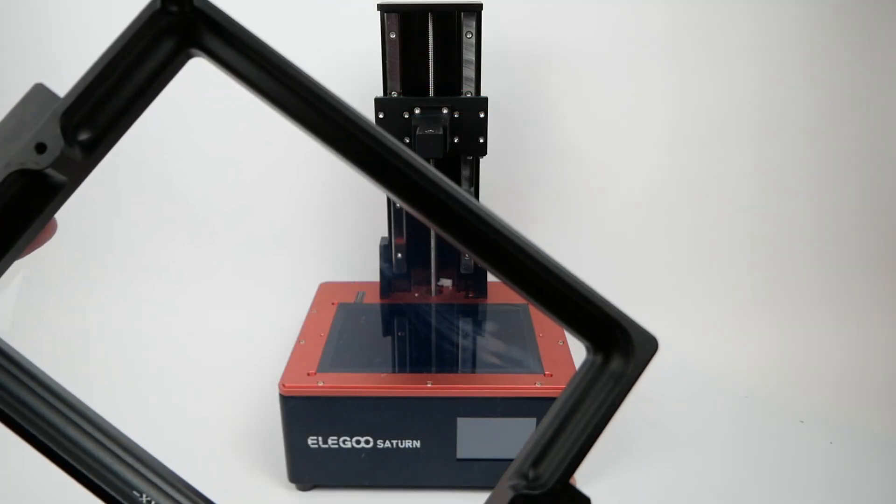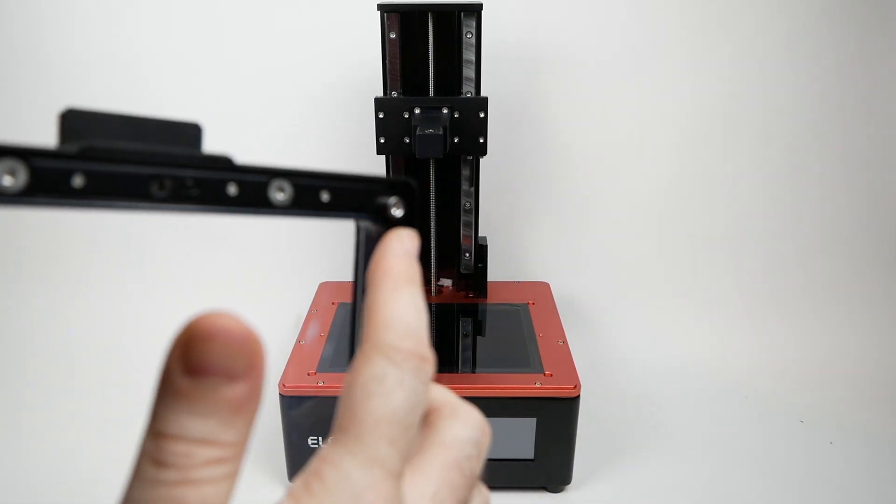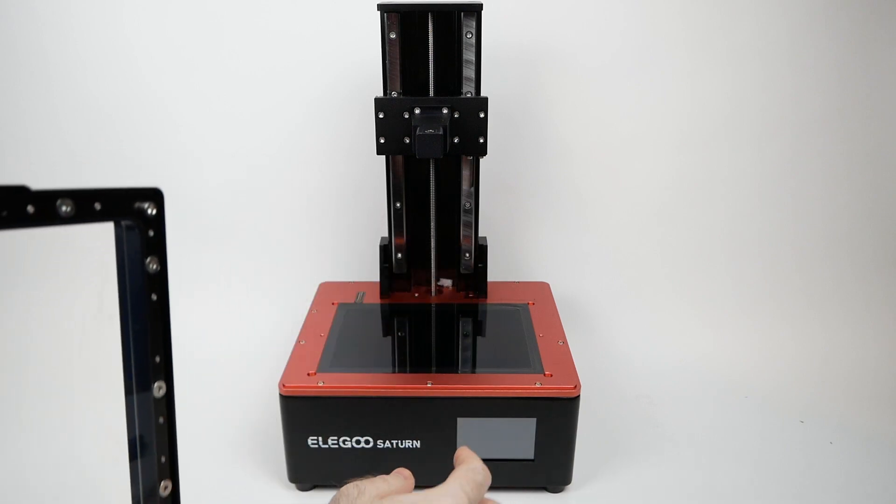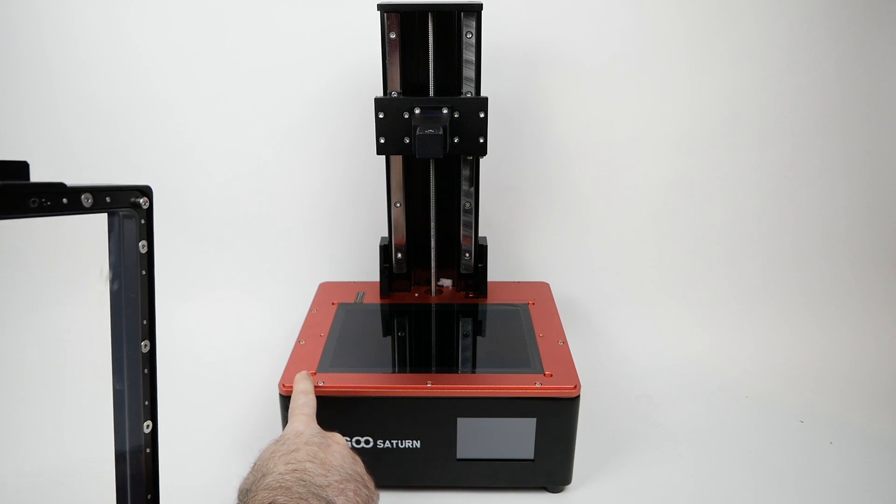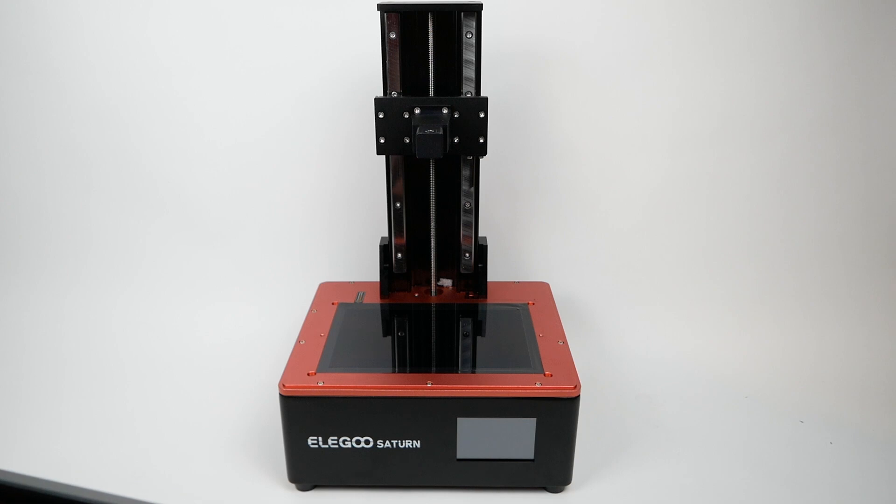One other minor improvement I noticed is that if you look at the bottom of the vat, there are bolts on each corner here that stick out and sort of form metal feet for the vat, and they fit into little holes in the base of the machine, that allows you to easily slot it into place, and when you put it down on a flat surface, the bottom of the FEP film is not actually rubbing up against anything, which is nice.